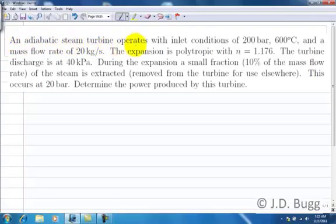An adiabatic steam turbine operates with inlet conditions 200 bar and 600 degrees C and a mass flow rate of 20 kilograms per second. The expansion is polytropic with N equals 1.176. The turbine discharge is at 40 kilopascals. During the expansion, a small fraction of the steam is extracted, which means it's removed from the turbine for use elsewhere. This occurs at 20 bar. Determine the power produced by this turbine.